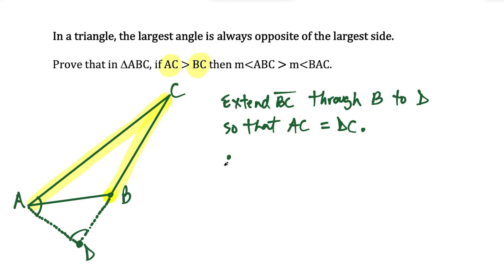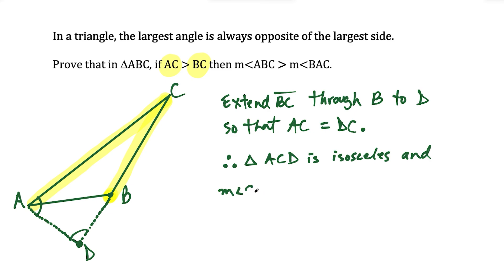We're just using the isosceles triangle theorem. Therefore triangle ACD is isosceles. Since we already said that these two sides were equal, this triangle is isosceles, and we could say that the measure of angle CAD is equal in measure to angle D. Angle D I can write with one letter because it's the only angle happening at that specific point.